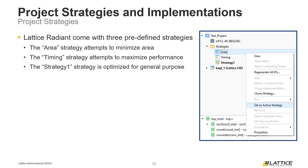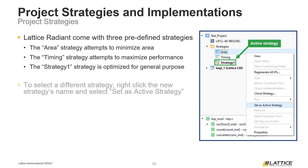There can only be one strategy that is active in a project at a time. The strategy that is currently active will have its name bolded in the list of strategies. To change the active strategy, right-click the name of the new strategy and select Set as Active Strategy. The new strategy should have its name in bold, indicating that it is active.